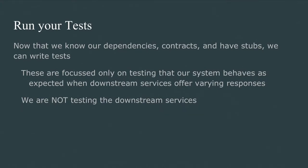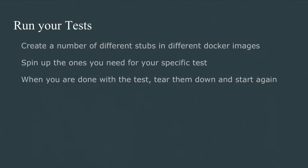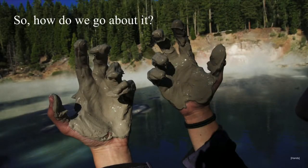Finally, we can get down to actually running our tests. We now know what our dependencies are, we've identified the contracts we need and written stubs for them, and we can write tests focused purely on testing that the system we control behaves as expected — regardless of what downstream services are offering. We can have stubs providing different use cases and varying responses, but the important thing is we're not testing those downstream services. We ended up creating a number of stubs in different Docker images that we could spin up when needed and tear down again when finished.